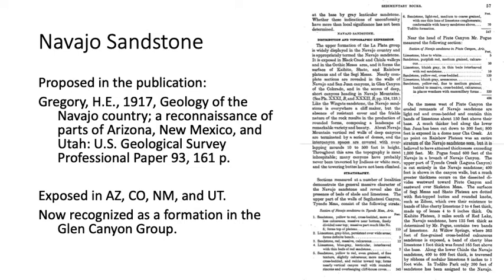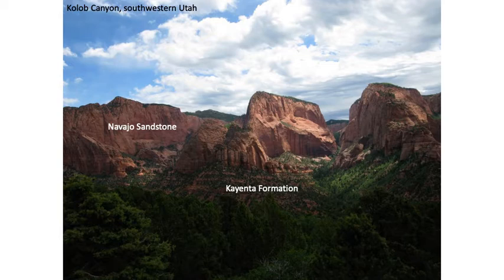A photograph of Kolob Canyon — part of Zion National Park running along Interstate 15 — shows the Chinle Formation below as a recessive unit of sandstone and shale, and then the massive Navajo Sandstone above it. The top of the Navajo is not quite visible in the photo, but it's quite massive there.